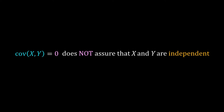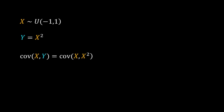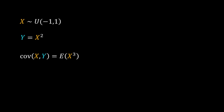Here is an example taken from Wikipedia. Suppose X is a uniformly distributed random number from minus 1 to 1, and Y equals X squared. So X and Y are not independent; their relation is non-linear. The covariance of X and Y equals the covariance of X and X squared, which expands to expectation of X times X squared minus expectation of X times expectation of X squared. Since X is uniformly distributed between minus 1 and 1, the expectation of X is 0, so the covariance reduces to expectation of X cubed.